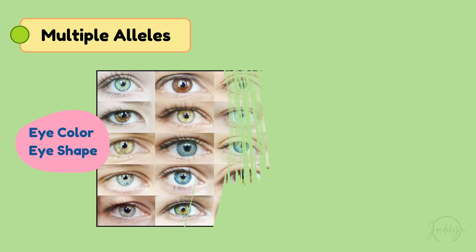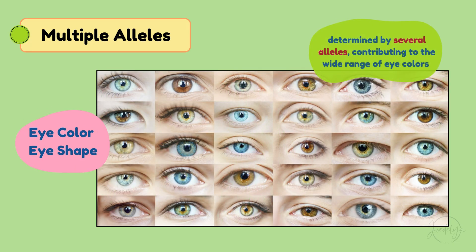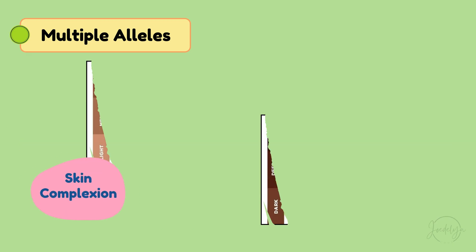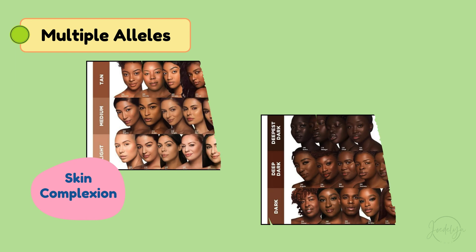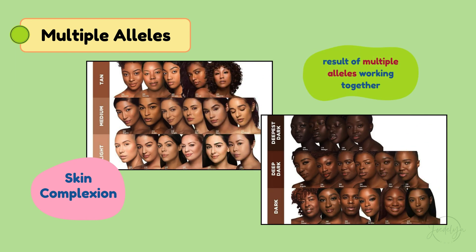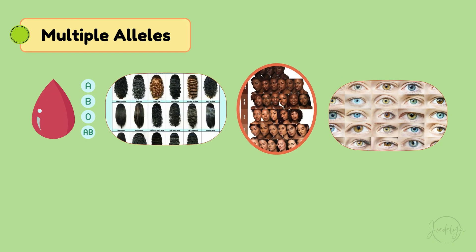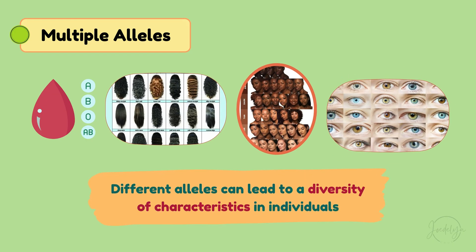Similarly, eye color and eye shape are determined by several alleles, contributing to the wide range of eye colors we see — like blue, green, and brown — as well as differences in shape. Even skin complexion, ranging from lighter to darker shades, is a result of multiple alleles working together. These traits show us how the interaction of different alleles can lead to a diversity of characteristics in individuals.